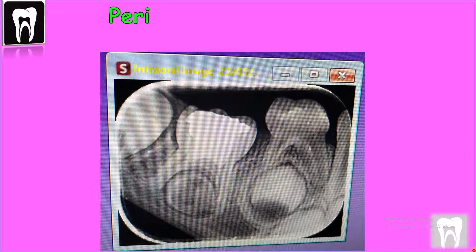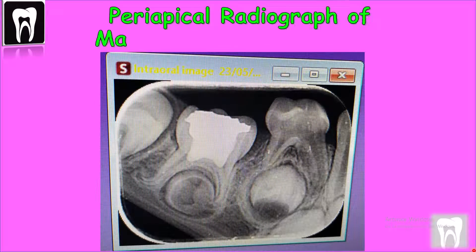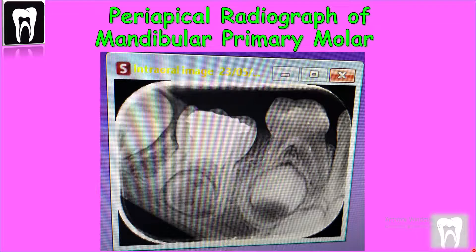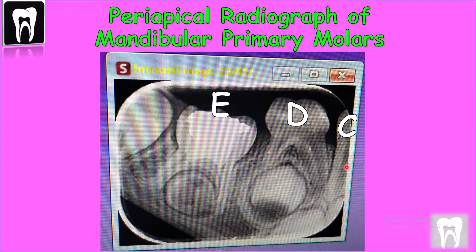This is a periapical radiograph of a child from the right mandibular primary molars. As you can see, we have the primary teeth — the canine and the primary molars, or teeth C, D, and E. This is the permanent first molar, and beneath the primary molars we have the permanent premolars.